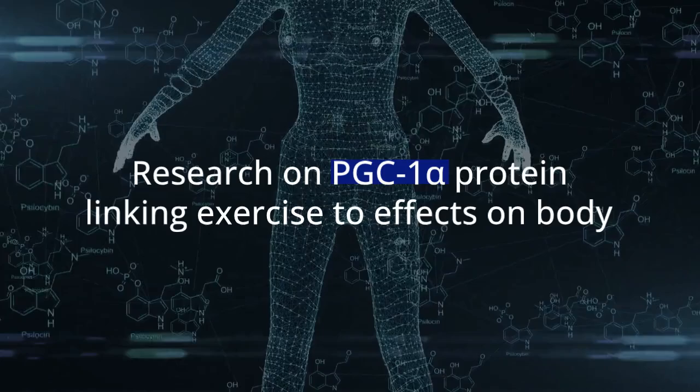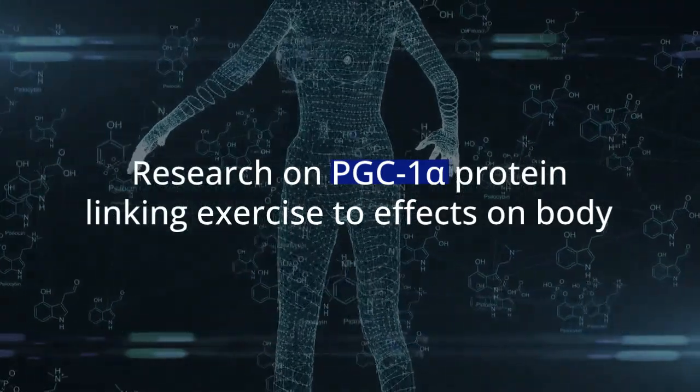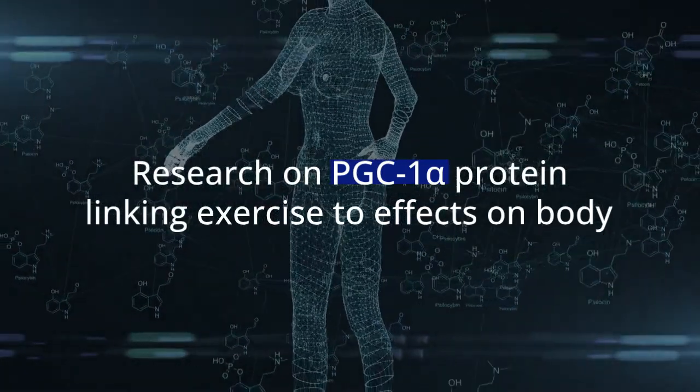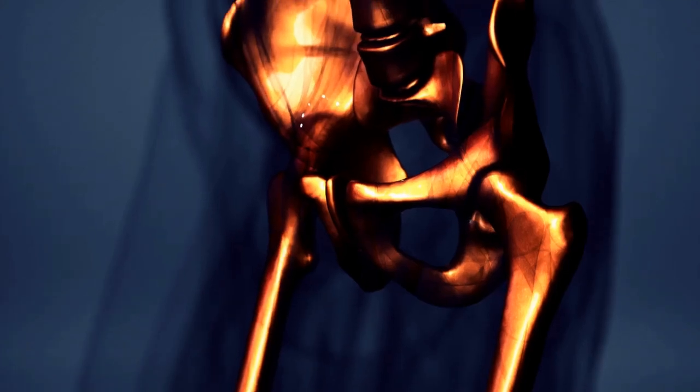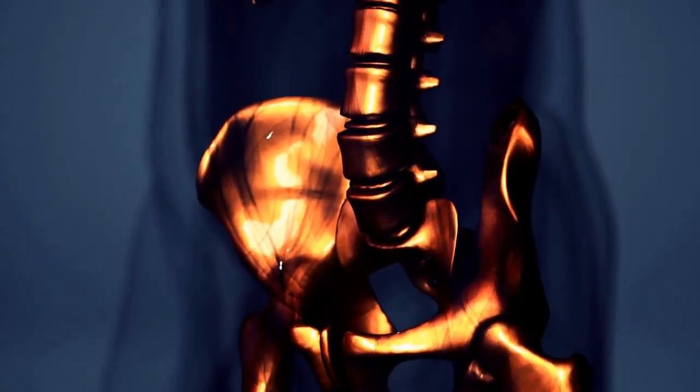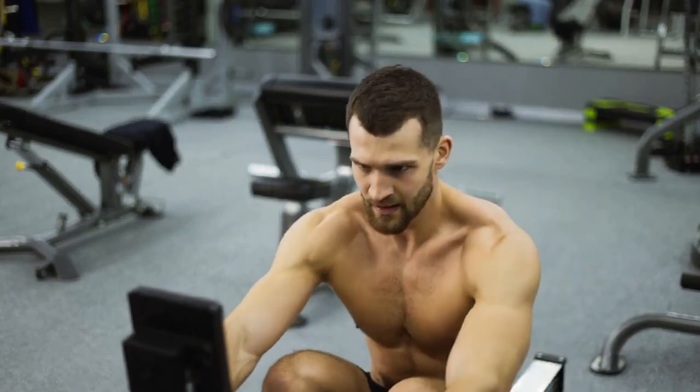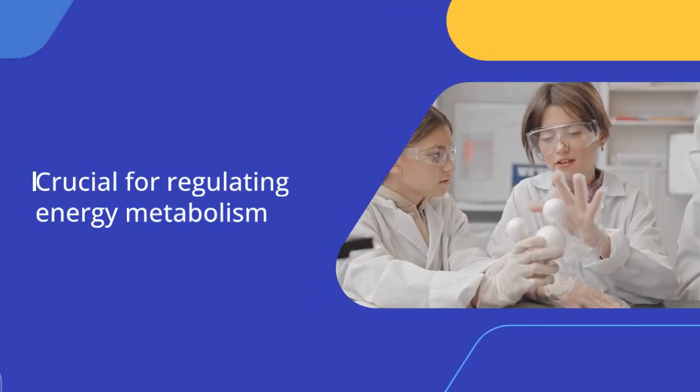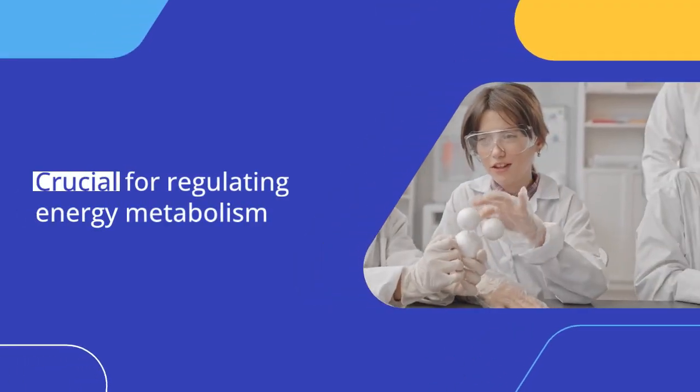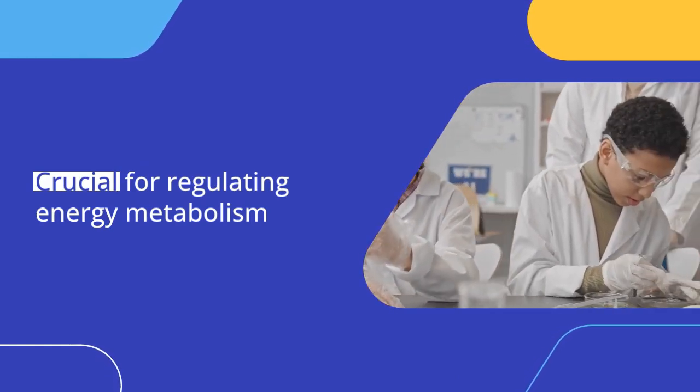The research team focused on a protein known as PGC-1α, which links exercise to its effects on the body. They found that there are different versions of this protein, named B and C, which are produced in muscles more than tenfold during exercise. These versions are crucial for regulating energy metabolism, unlike the conventional A version.